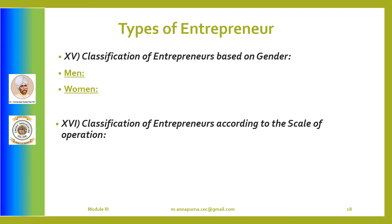The next classification is based on scale of operation. A small entrepreneur owns an enterprise having 10 to 49 employees and has made an investment in plant and machinery up to 1 crore. A medium entrepreneur owns an enterprise having 50 to 249 employees with investment in plant and machinery between 1 crore to 5 crore. A large entrepreneur owns an enterprise having 250 or more people with investment in plant and machinery above 5 crore.